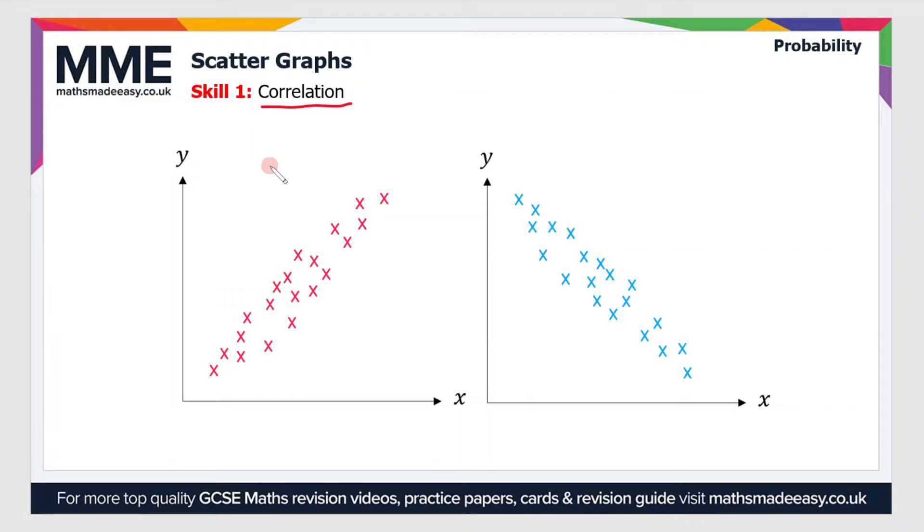What do we mean by correlation? Well, a correlation is essentially a way of determining whether or not there's a link or a relationship between two variables. There's two types of correlation that we'll see. For instance, if we have two variables, x and y, well if x increases and y also increases, then we can say that there's a positive correlation.